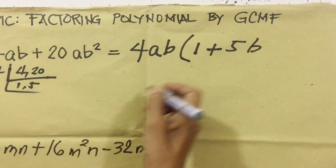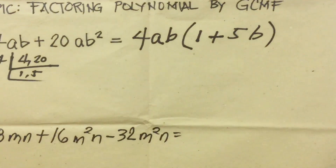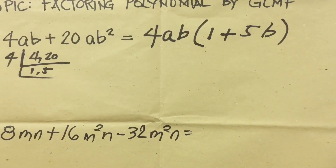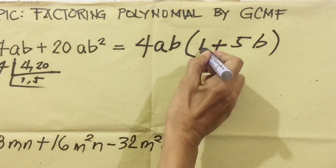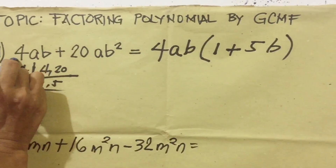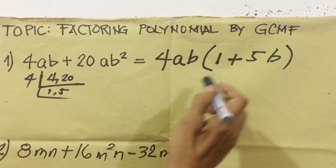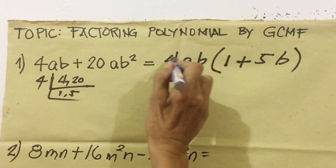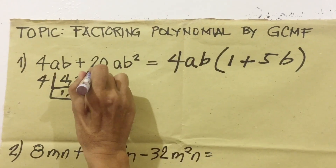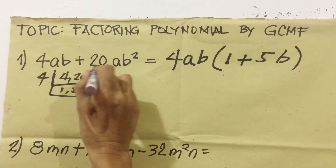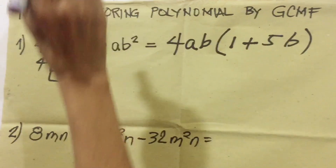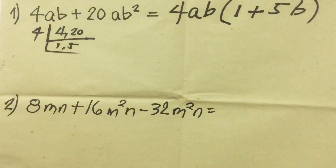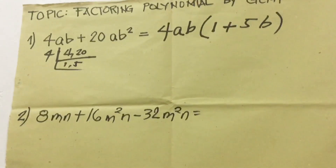That is our answer. Let's check if it's correct. 4ab times 1 equals 4ab — correct. Then 4ab times 5b: 5 times 4 is 20, and b times b is b squared — correct. So that is our answer for number one.